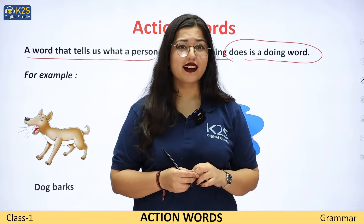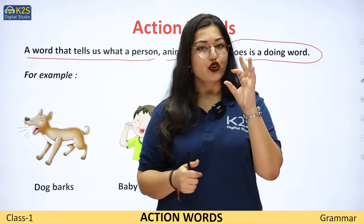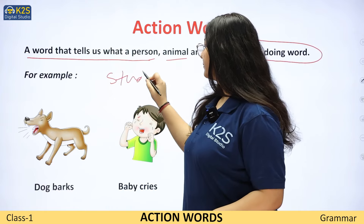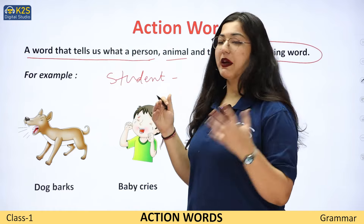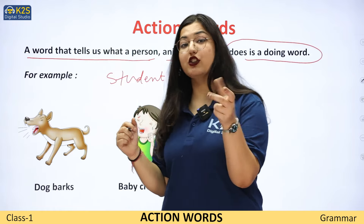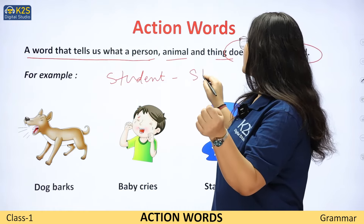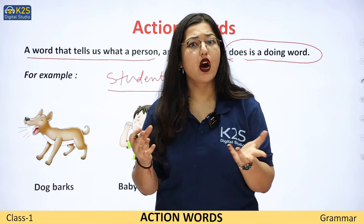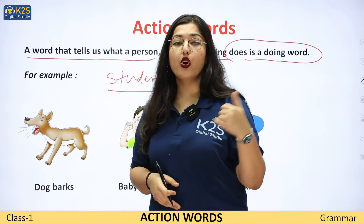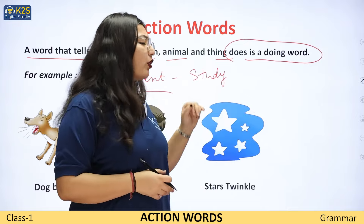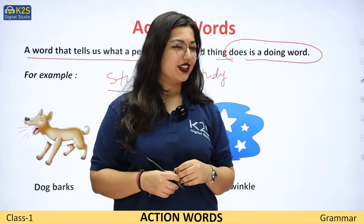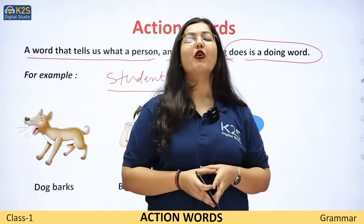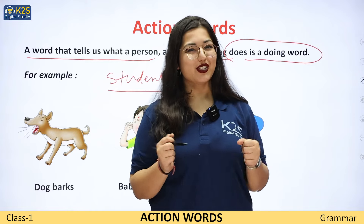Student kya kerta hai? Study. Aap ek student hai — aap mere pyaare pyaare students hai. Aap student ho, aap kya kerte ho? Aap study kerte ho. Toh jo student ho gya — woh mera noun ho gya. Aur jo study ho gya — yeh kya ho gya? Action word. Action word means jo ek action kar rahe hon, toh woh mera action word ho jayega.